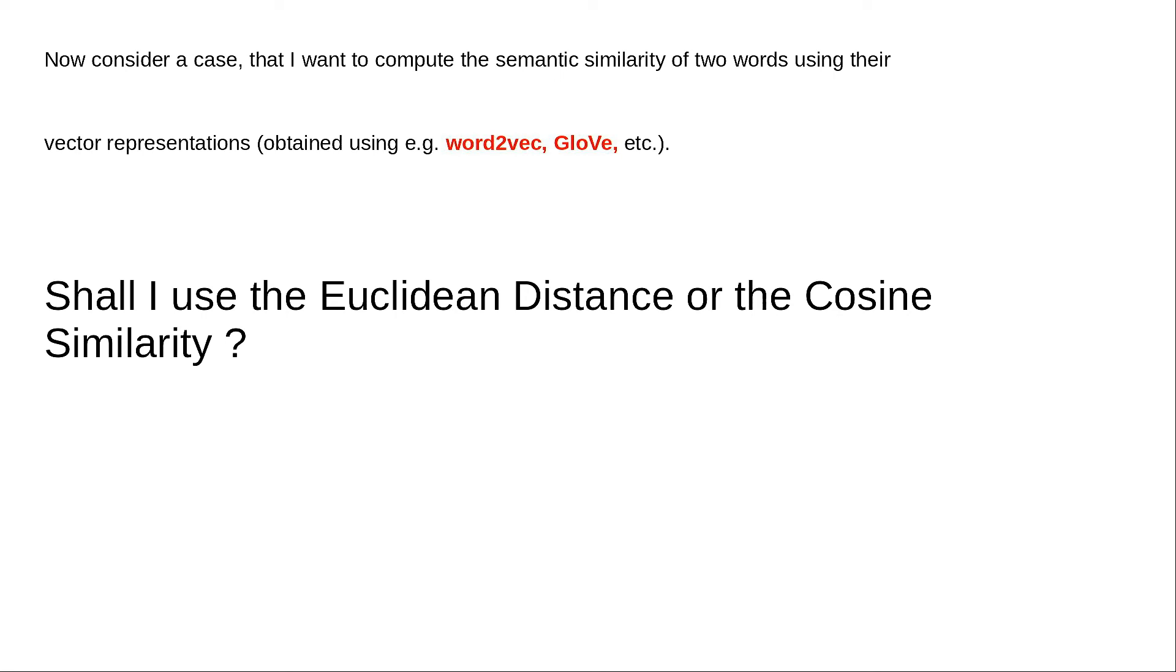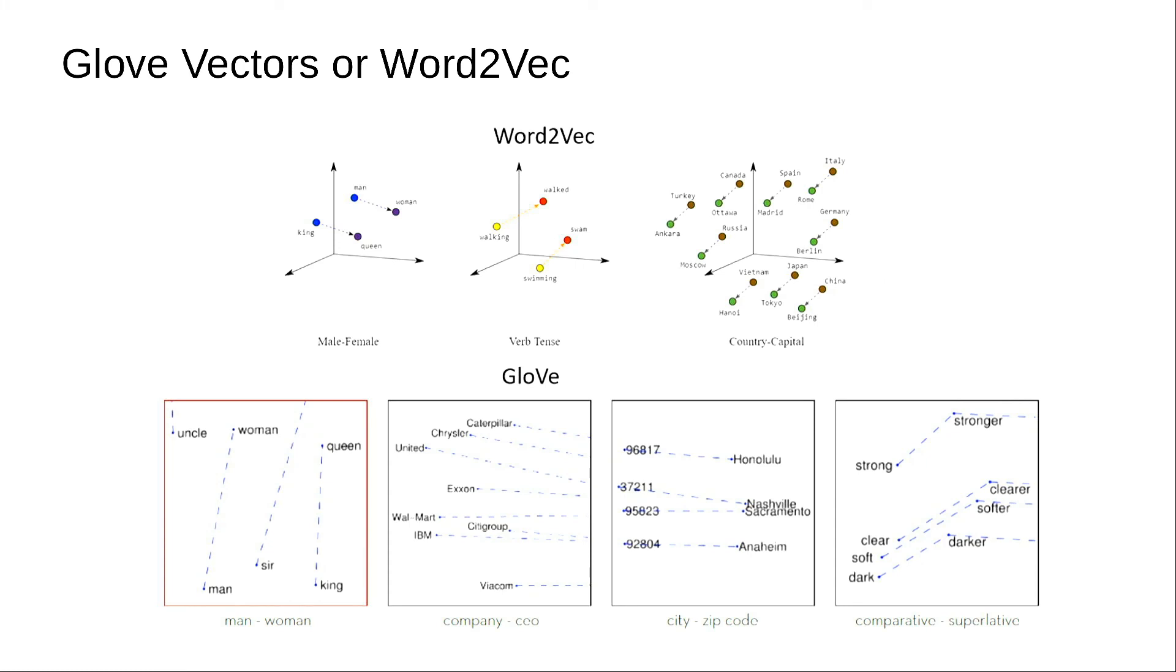But now we consider the logic for using Euclidean distance measure for this situation. The reason for using cosine similarity was completely based on term frequency metric. But if we are using word vectors using word2vec or GloVe, then the vector terms are basically random weights of the neural network that they were trained on. It does not represent the term frequency count anymore.